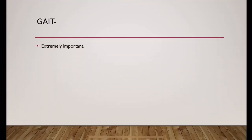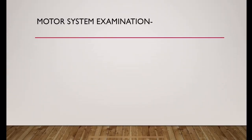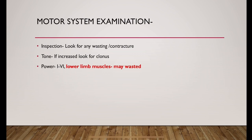Then check gait — this is extremely important for the examination. Read the normal walk cycle and look for any spastic gait. Then start the motor system examination with inspection. Look for any wasting or contracture. Check tone — if it is increased, look for any clonus. Check power, as lower limb muscles may get wasted.